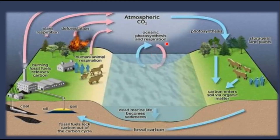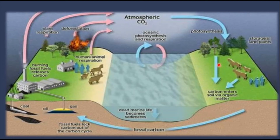Through photosynthesis by algae in oceans, terrestrial plants, and algae in water bodies, carbon dioxide is fixed into organic form. Carbon also enters the soil through organic matter from animal waste, human waste, and plant litter, which settles into the soil and converts into fossil carbon. This fossil carbon, taken up in the form of coal and similar resources, releases carbon dioxide back into the atmosphere when burned.